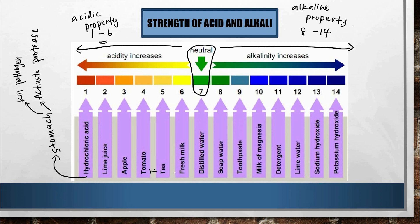Fresh milk is slightly acidic but close to neutral, so it is not harmful to drink. Salt water is near neutral. Toothpaste is slightly alkaline. Milk of magnesia is a medicine taken for gastric pain — when too much hydrochloric acid builds up in the stomach, milk of magnesia is used to neutralize it and relieve the pain. Detergent is alkaline, and lime water is used to neutralize acidic soil to improve plant growth.